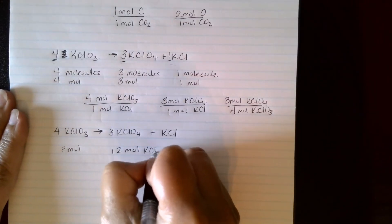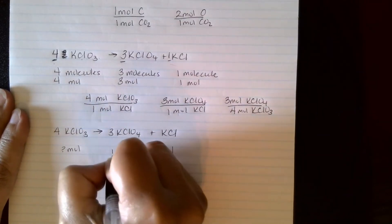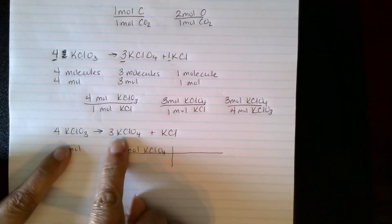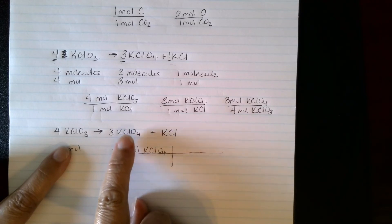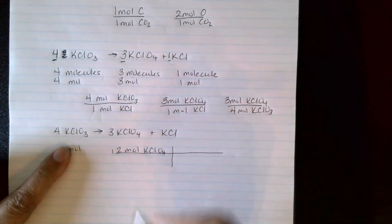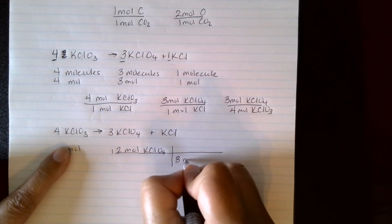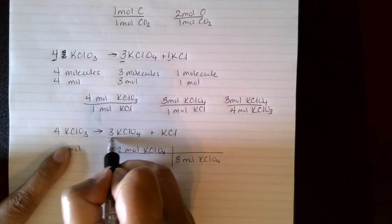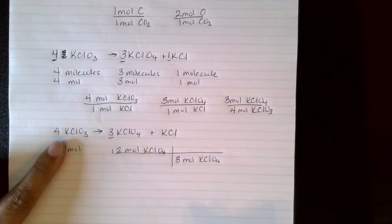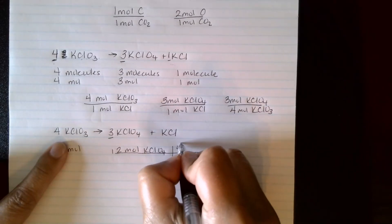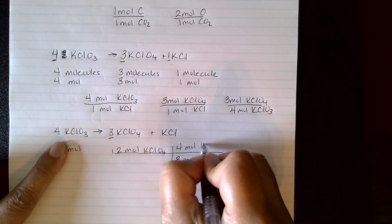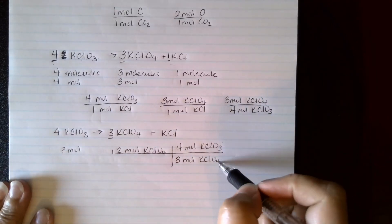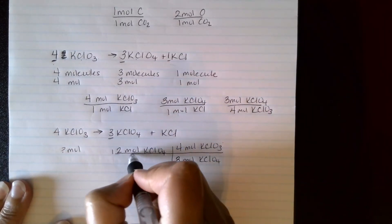So I can use this mole ratio. I'm looking at these two things, and I have this one right now, so it's going to go down here to cancel. So three moles of the KClO4, so I'm using this coefficient, and I'm trying to find this one on the top, so four of the KClO3. So I do what I want over what I got, and those will cancel.